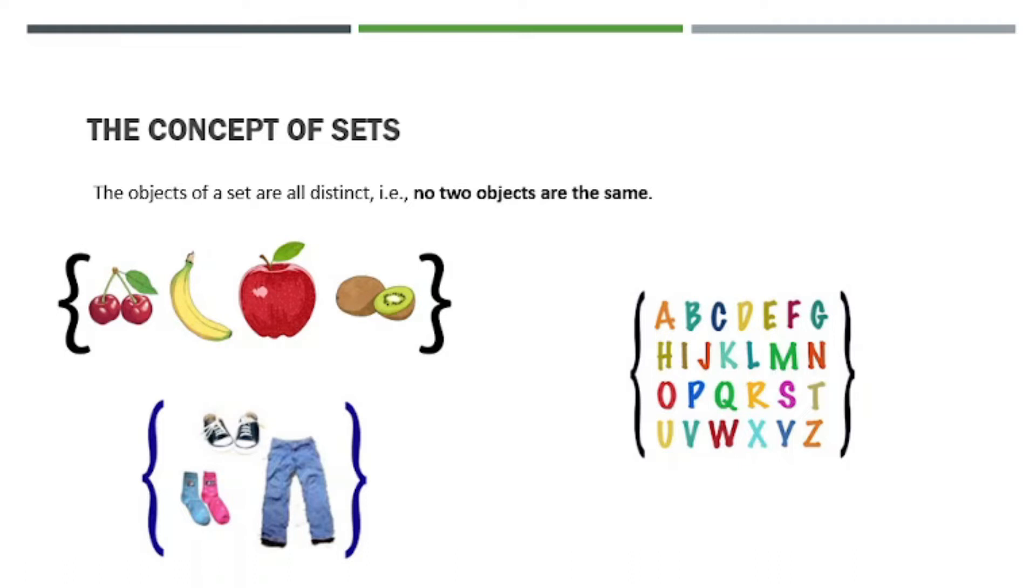This means that all the contents of our set are unique. For example, if you have a banana here, don't add another banana. In mathematics, a set must be distinct, so no two objects are the same. For example, if you have shoes, don't add another shoes to the set. Or for the alphabet, if you have A, B, C, D, don't add another letter again. Each element must be unique.